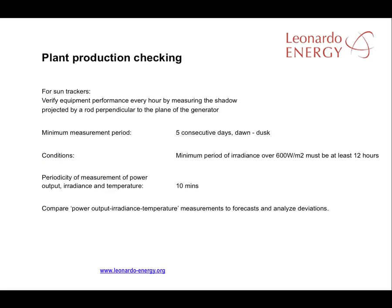In this slide you can find a suggested schedule for plant production checks. Measure every ten minutes for at least five consecutive days from dawn to dusk. That bank of data can be compared to the expected measures from the solar radiation maps or from the data from the meteorological station.